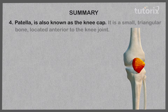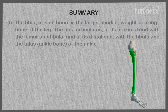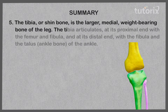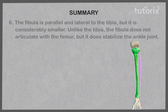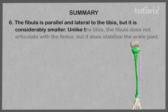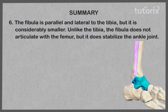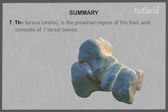The patella, or kneecap, is a small triangular bone located anterior to the knee joint. The tibia, or shin bone, is the larger medial weight-bearing bone of the leg; it articulates proximally with the femur and fibula, and distally with the fibula and talus. The fibula is parallel and lateral to the tibia but considerably smaller; unlike the tibia, it does not articulate with the femur, but it does stabilize the ankle joint.